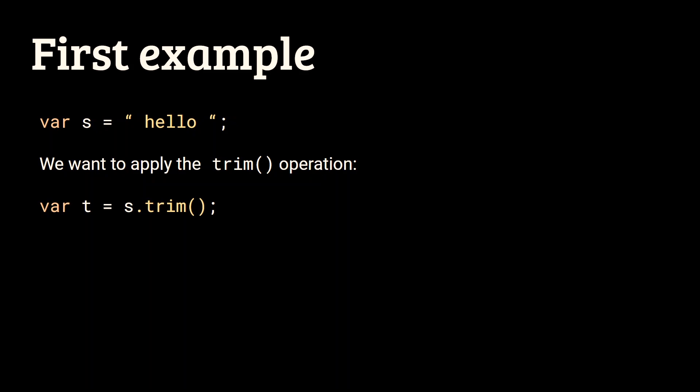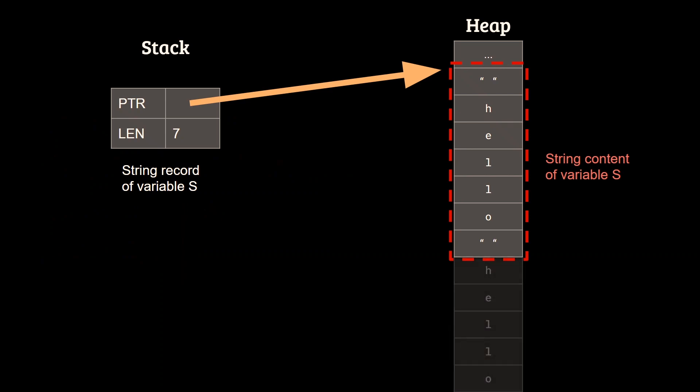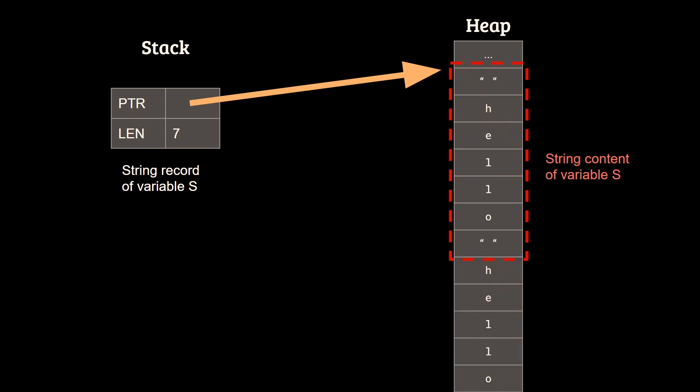In this case, the variable t will hold the value hello without any surrounding space. In most garbage collected languages, that operation causes a separate allocation, so you end up with two memory blocks on the heap.